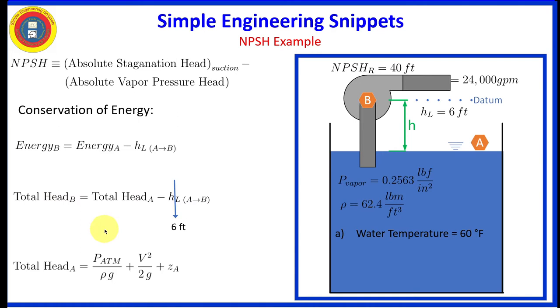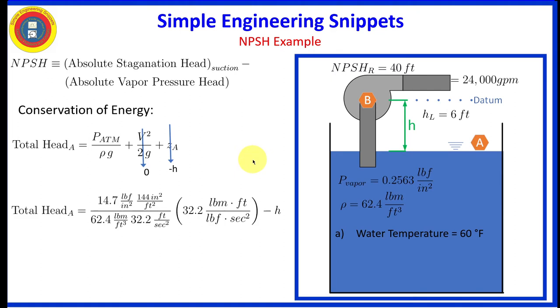We can express this in terms of total head, and keep in mind that the head loss is supplied and is 6 feet. Total head consists of three components: the pressure head, the velocity head, and the elevation head. Since this is a large tank where Alpha is, the velocity head is essentially zero. And again, the elevation of Alpha with respect to our datum is minus H. So going through, we can plug in our numbers. And we get that the total head at Alpha is equal to 33.9 feet minus H. Again, H is what we're looking for. It is the elevation of the pump with respect to the free surface of the water.